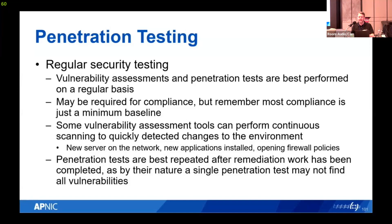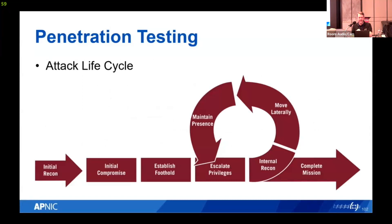Penetration tests are best repeated after remediation work has been completed — there's no point in a repeated penetration test if you haven't fixed any vulnerabilities. To look at what an attack life cycle looks like — a simple but mostly accurate overview — we'll go through these steps starting with initial reconnaissance: scanning, finding email addresses, IP addresses and domain names, checking what services and versions are running, collecting information.